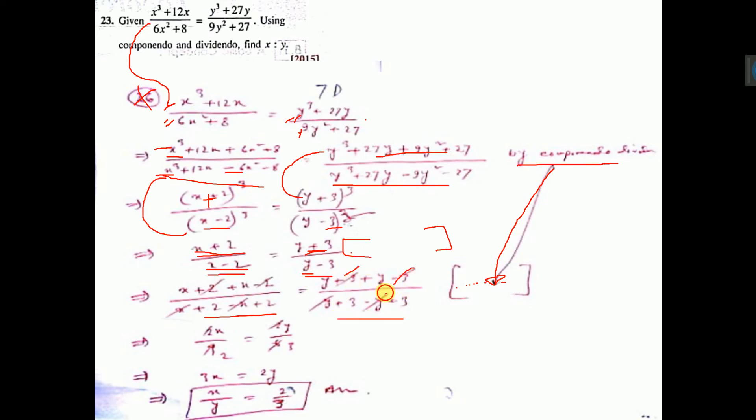Now 3, 3 cut; y, y cut; y, y cut; 2, 2 cut; x, x cut. So x plus x: 2x. 2 plus 2: 4. Y plus y: 2y. 3 plus 3: 6. Now cut by 2, so 2x by 4, that's x by 2. 2y by 6, that's y by 3.